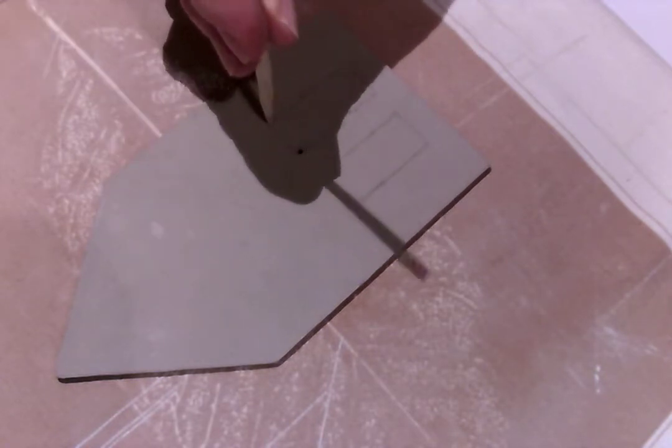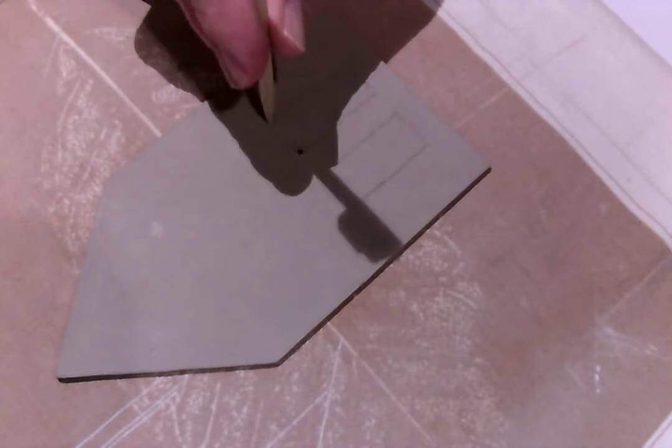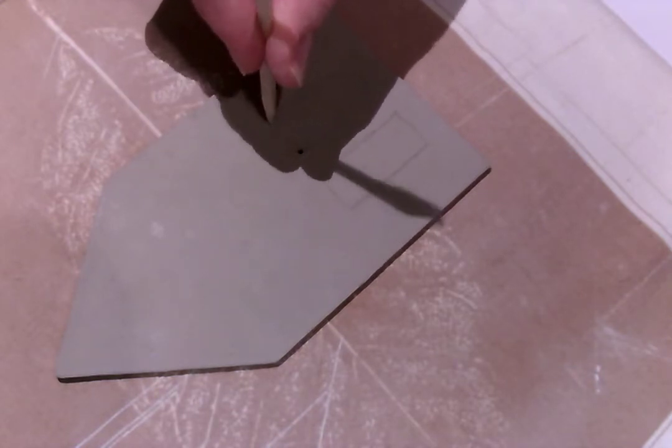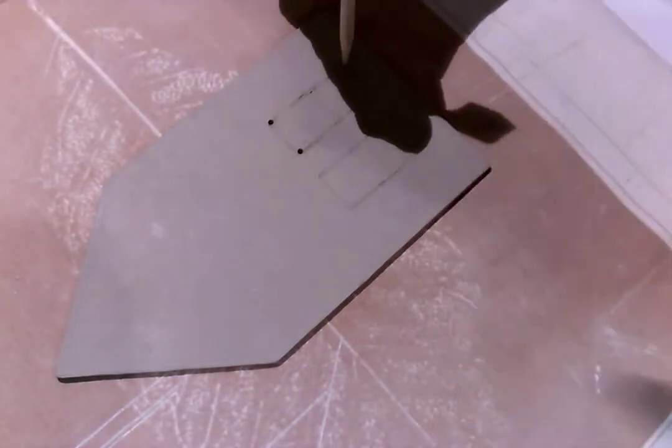When working with clay, when you have intersecting lines, particularly at a sharp angle, they sometimes develop cracks there. This method of making a circular hole should stop that from happening.